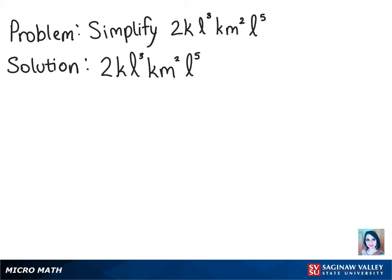To start simplifying this, let's see which same bases we have. We have the variables k, l, and m, and we can see that there are two times k is written and two times l is written. So we want to combine those.